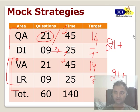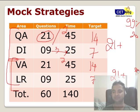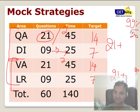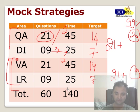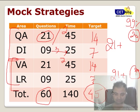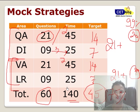For verbal: 2 minutes per question, 14-15 attempts. For LR: 7 attempts. So roughly 21+ attempts per section with good accuracy should get you around 95-96 percentile. For 99 percentile, you need 20 correct answers — whether you attempt 25 and get 3 wrong, or attempt 21 and get 1 wrong. Your total target across 60 questions in 140 minutes is 42-45 attempts — that's 75% of the paper. All the best!